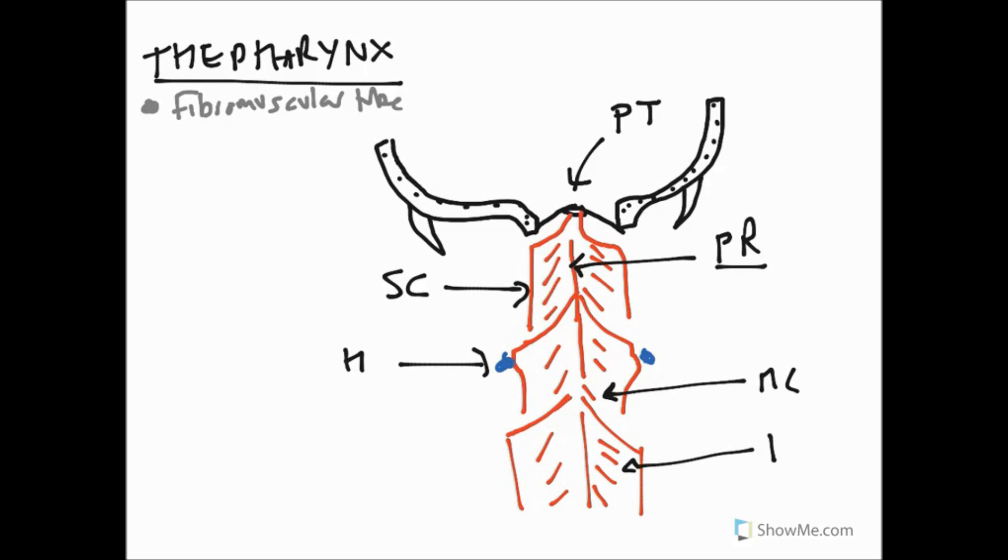So let's just summarize the attachments of this external group that forms this fibromuscular tube. We've got our superior constrictor up here and the superior constrictor attaches to the pharyngeal tubercle which I've mentioned, but anteriorly attaches to another raphe which is known as the pterygomandibular raphe.